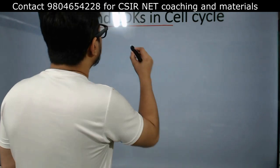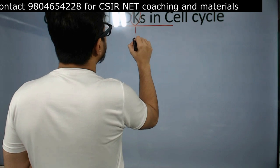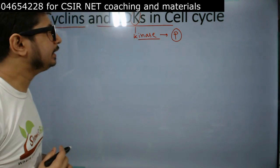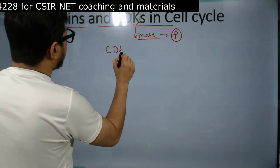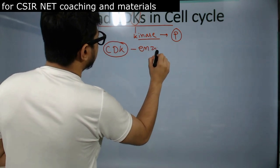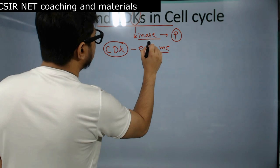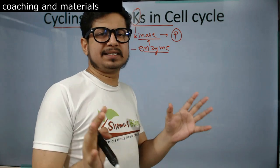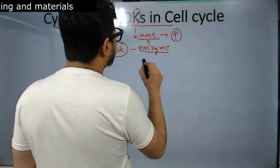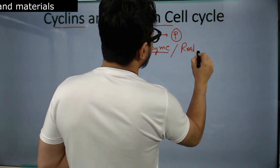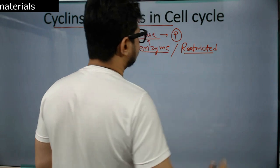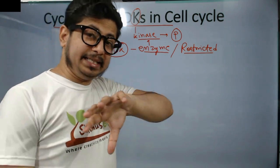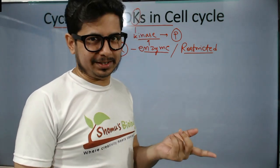The modification we are talking about is addition of phosphate groups. CDK is an actual enzyme — it's a kinase enzyme which can phosphorylate other proteins in the cell, which can lead to some impact like any cell signal transduction pathway. But the CDK's job is restricted — CDK cannot function on its own. CDK requires cyclin in order to function.